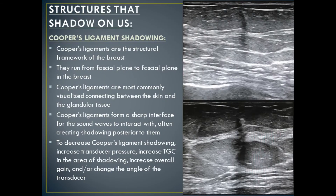It's important to note structures that normally shadow on ultrasound. Cooper's ligaments are the structural framework of the breast — ligaments that run from fascial plane to fascial plane, most commonly visualized connecting between the skin line and the glandular tissue within the subcutaneous fat. Since they're hyperechoic on ultrasound, they're most easily visualized in the fat layer. Cooper's ligaments form a sharp interface for sound waves, often creating shadowing posterior to them. To decrease Cooper's ligament shadowing, increase transducer pressure, increase the TGC in the area of shadowing, increase overall gain, and/or change the angle of the transducer.